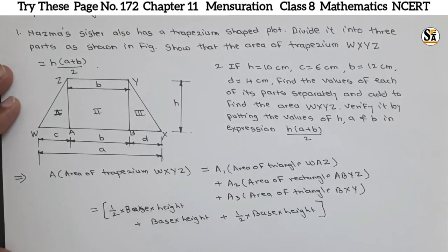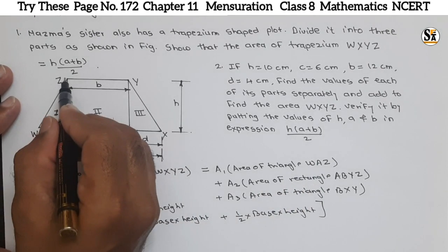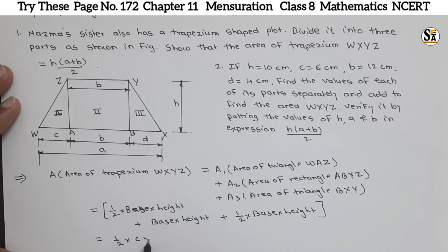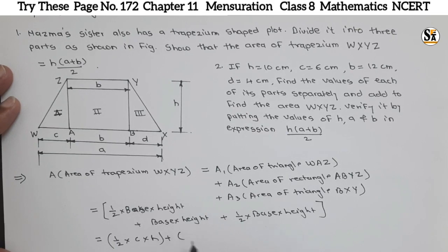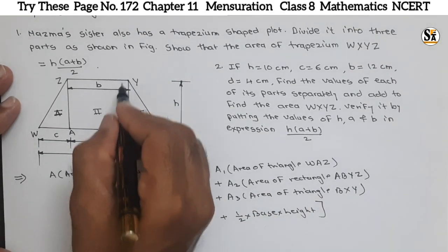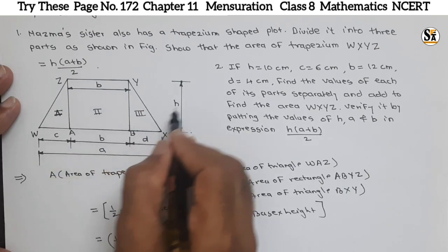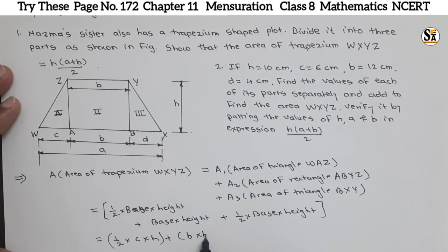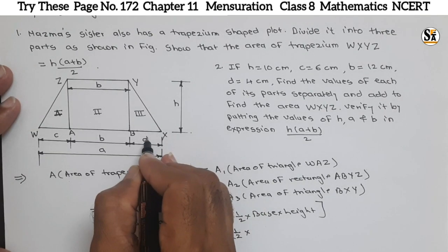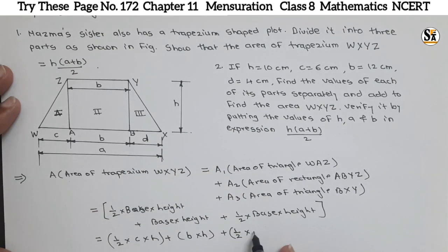So just put the values. For the first triangle WAZ, base is C and height is H, giving 1/2 × C × H. Then A2, area of rectangle ABYZ, base is B and height is H, giving B × H. Then plus 1/2 for the third triangle, base is D and height is H, giving 1/2 × D × H. The height H is common for all three figures.